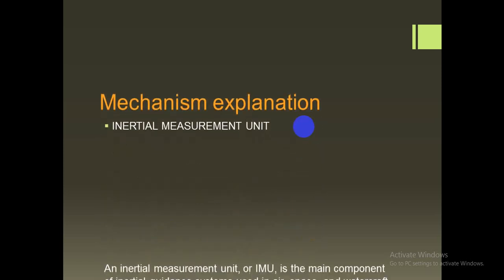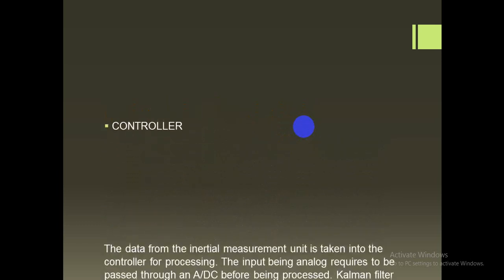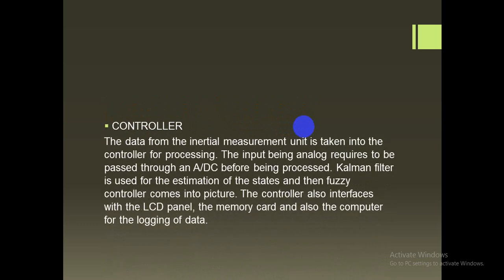This is the detailed mechanism. The first is the IMU, or inertial measurement unit. The IMU is the main component of an inertial guidance system used in air, space, and watercraft, including guided missiles. It measures inertial acceleration by detecting the current rate of acceleration as well as changes in rotational attributes. The IMU of a common autopilot system includes a three-axis accelerometer along with three gyroscopes on the same axes — X, Y, and Z. The combined data from these devices is used as input and continues to the controller or processor unit.